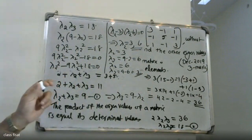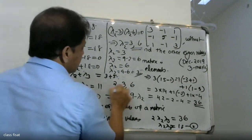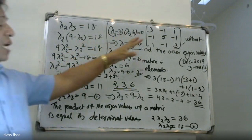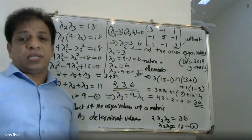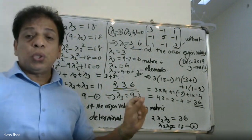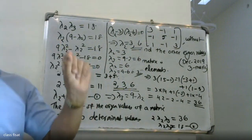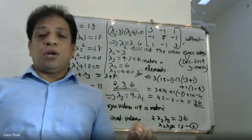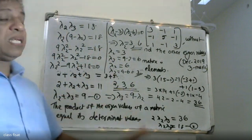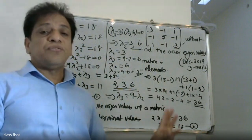The eigenvalues of the given matrix are 2, 3, and 6. We used two properties: the sum of eigenvalues equals the sum of the diagonal elements (trace), and the product of eigenvalues equals the determinant. These two properties gave us two equations, which we solved for λ2 and λ3.